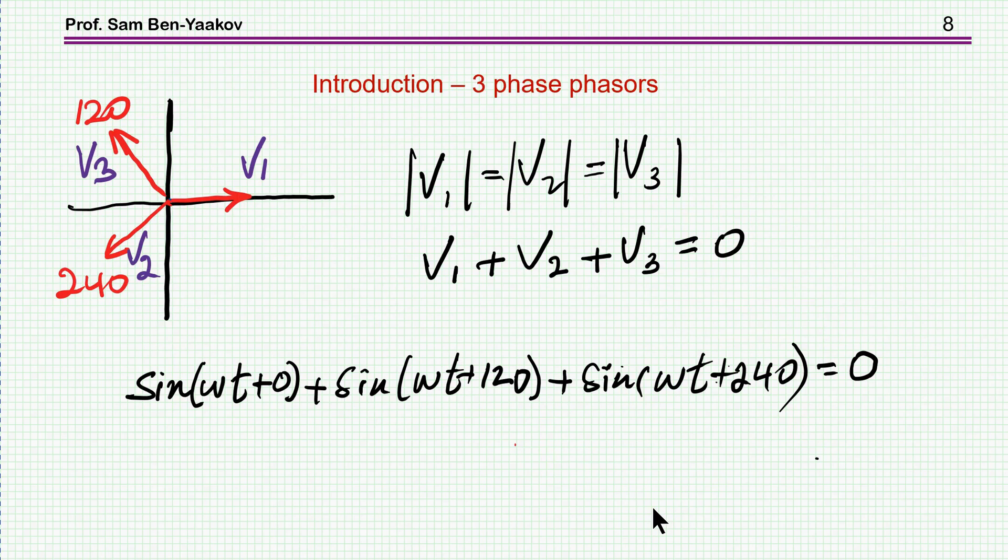Let's have a look now at some phasor diagram related to what we are going to talk about. Let's assume we have three voltages, three phasors, V1, V2, V3, which are like a three-phase arrangement. They are 120 degrees one from the other. This would be 120, this would be 240. We assume that the absolute value, that is the magnitude, is the same. And of course, since we have now these three phases separated by this 120 degrees, it can be shown that the sum of these vectors is actually zero. That is, if you add up sin omega t plus sin omega t shifted by 120 degrees plus sin omega t shifted by 240, you get zero.